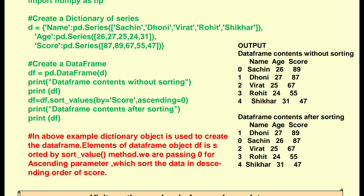In the above example, a dictionary object is used to create the DataFrame. The DataFrame df is sorted by the sort_values() method. We are passing zero for the ascending parameter, which sorts the data in descending order of score.